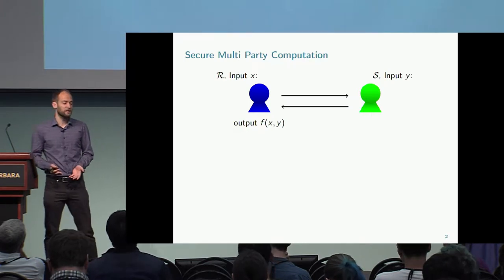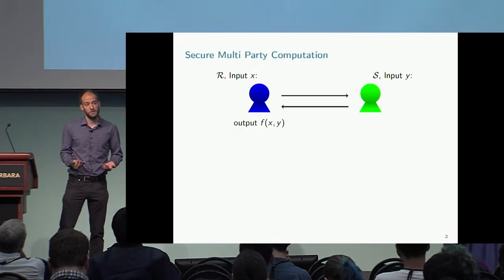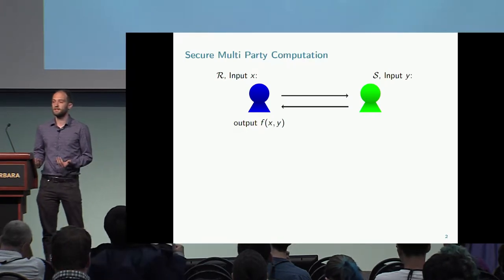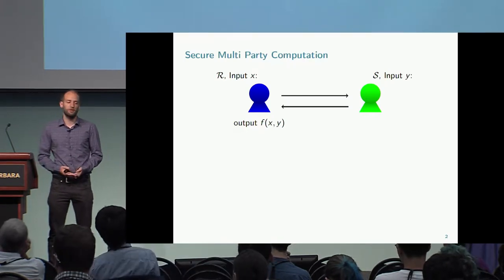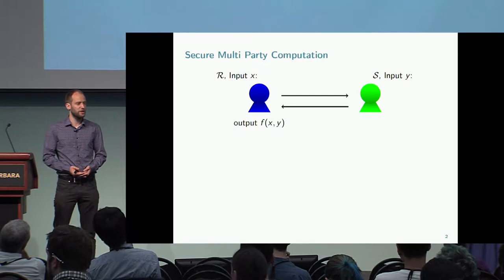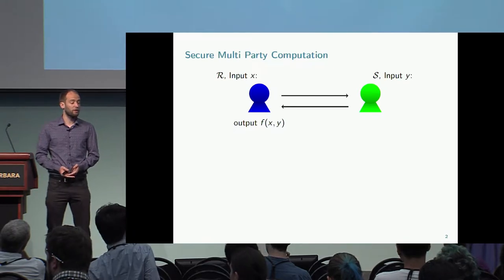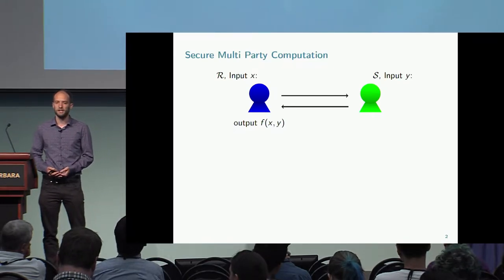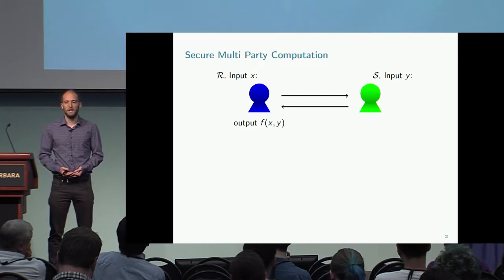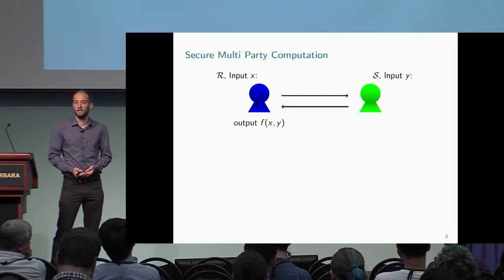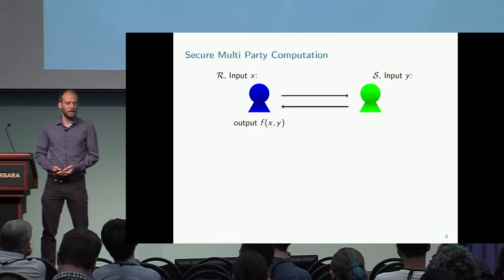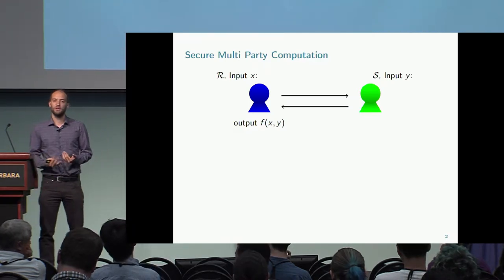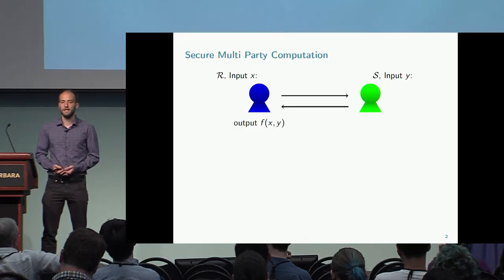In this picture, you can see two parties — a simplified setting of secure multi-party computation. We have a party R with an input X, and a party S with an input Y, and they want to compute some functionality F.